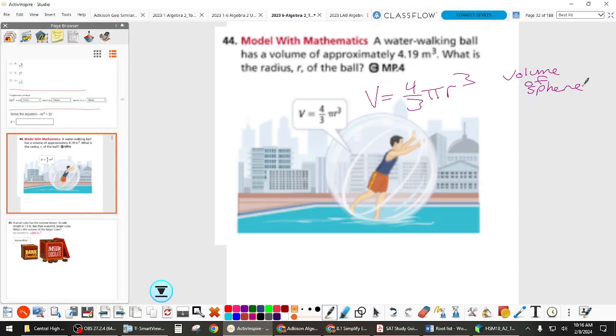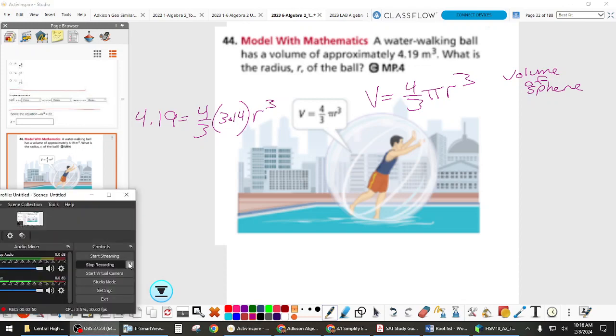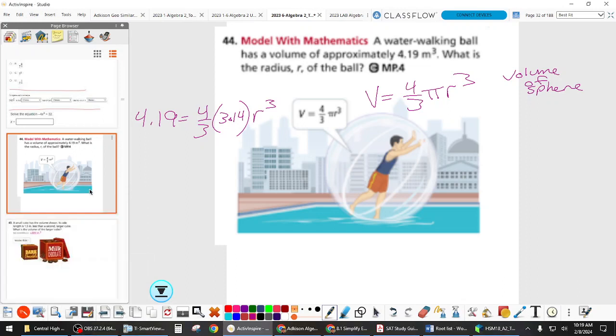Guys, read the problem again. What else was given that we could plug into this formula? The volume, right? So basically, we're going to plug 4.19 in. Yes, we can put 3.14 for pi if you want. And then we need to solve for r cubed. So now that that's set up, go ahead and do that. Actually, I said we need to solve for r cubed, but really we want r, right? We want to get r by itself.